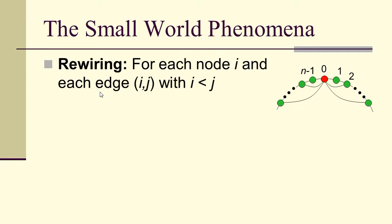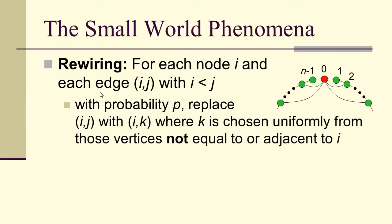And then they rewired. Their rewiring scheme was, for each node i and each edge ij, where i is less than j, with probability p, replace ij with ik, where k is chosen uniformly from those vertices not equal to or adjacent to i. So of all the things that i is not connected to, and not itself, you just randomly choose, uniformly randomly choose, another vertex to hook it up to.